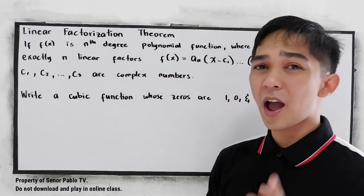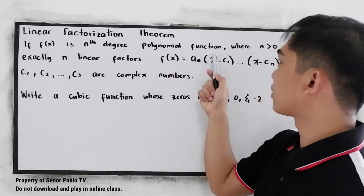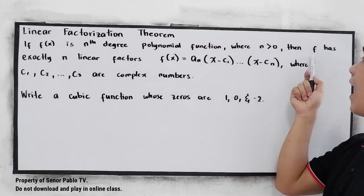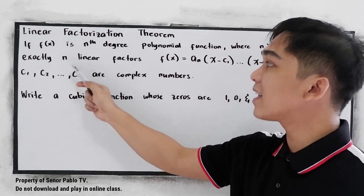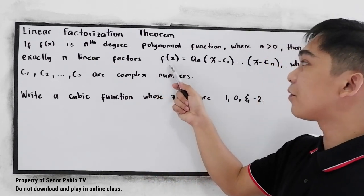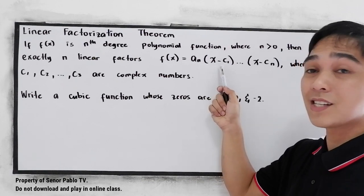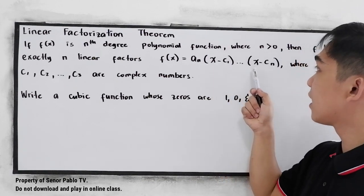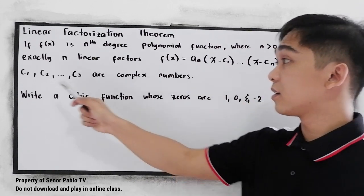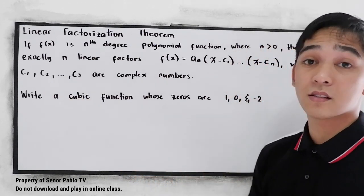Let us define: if f of x is an n-degree polynomial function, where n is greater than 0, then f has exactly n linear factors, such that f of x is equal to a sub n, times the quantity x minus c sub 1 ... times x minus c sub n, where c sub 1, c sub 2, and c sub 3 are complex numbers.